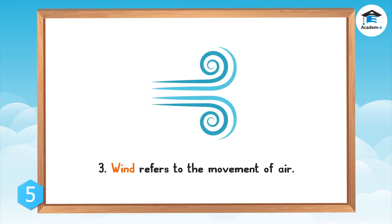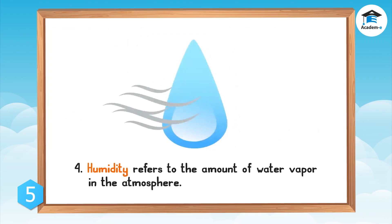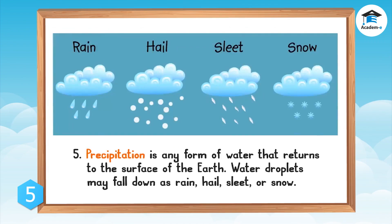Wind refers to the movement of air. Humidity refers to the amount of water vapor in the atmosphere. Precipitation is any form of water that returns to the surface of the earth; water droplets may fall down as rain, hail, sleet, or snow.